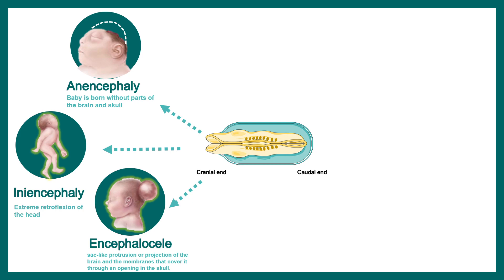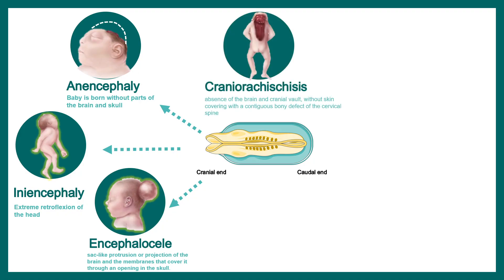In the case of encephalocele, a sac-like protrusion is found in the back of the head. There is also another defect known as craniorachischisis, where the entire brain, cranial wall, spinal cord — everything is absent. This is very severe; the babies do not survive.